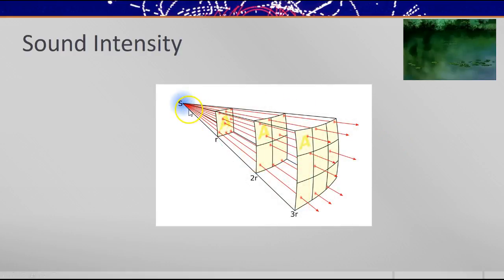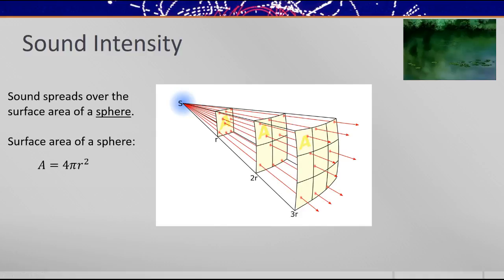In fact, that's not quite the correct picture because the sound spreads out over the surface area of a sphere. So if we take our intensity formula, power over area, and know that the power of the sound is spreading out over the surface area of a sphere, we can say that the intensity of a sound is the power of the instrument that produced it divided by 4πr².